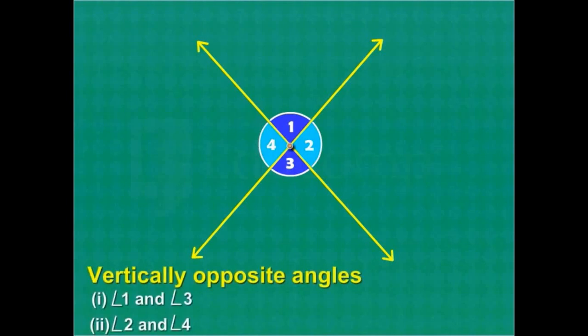Recall that when two lines intersect at a point, four angles are formed. In such cases, two pairs of opposite angles are formed, which are called vertically opposite angles. They have a common vertex, but no common arm.